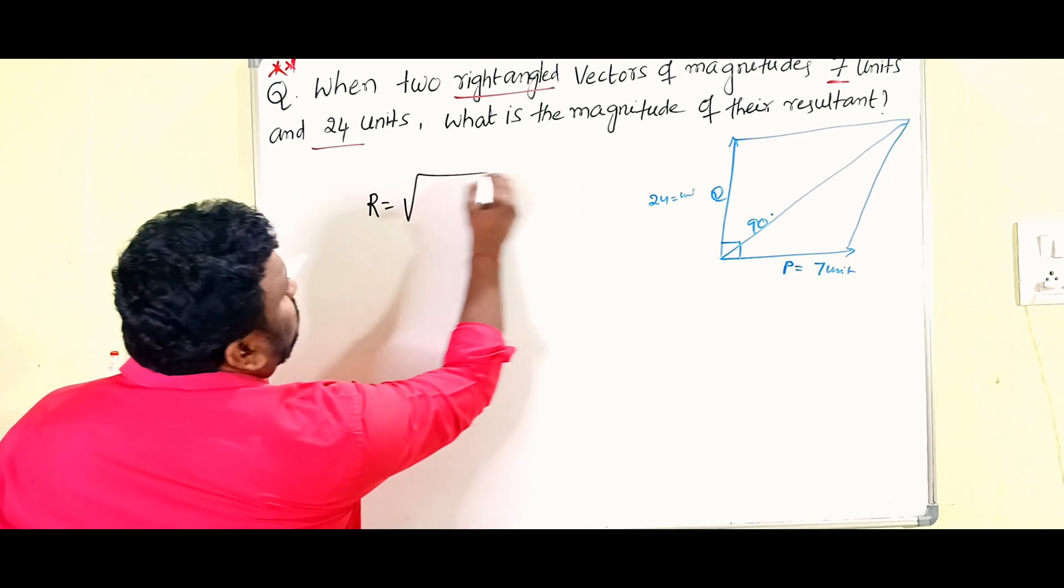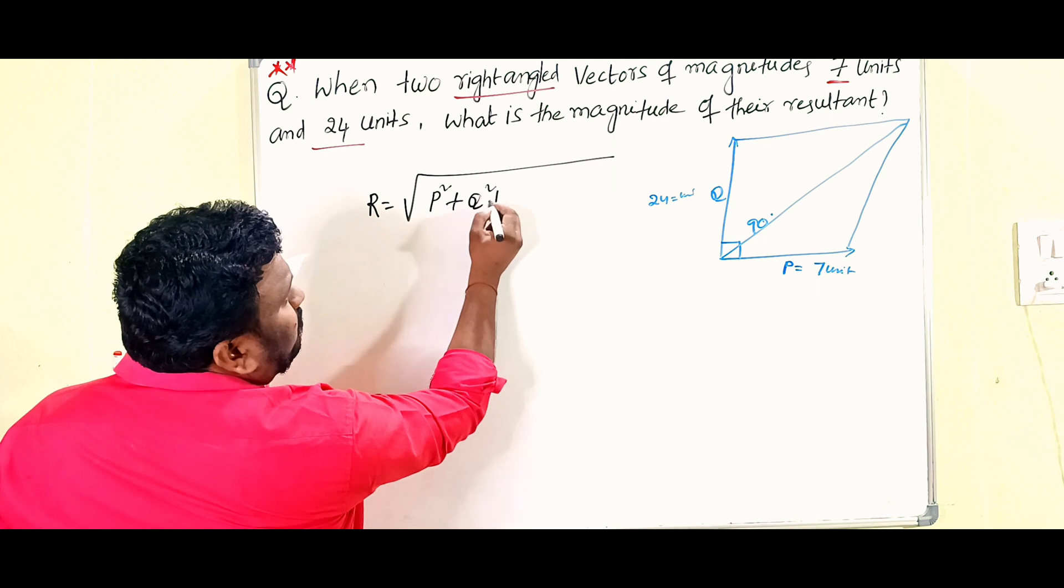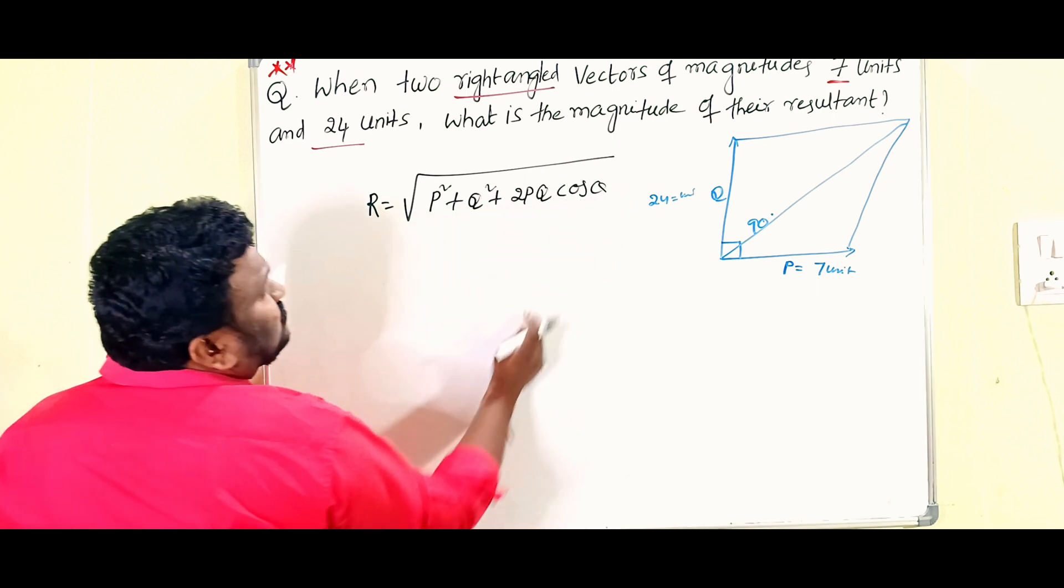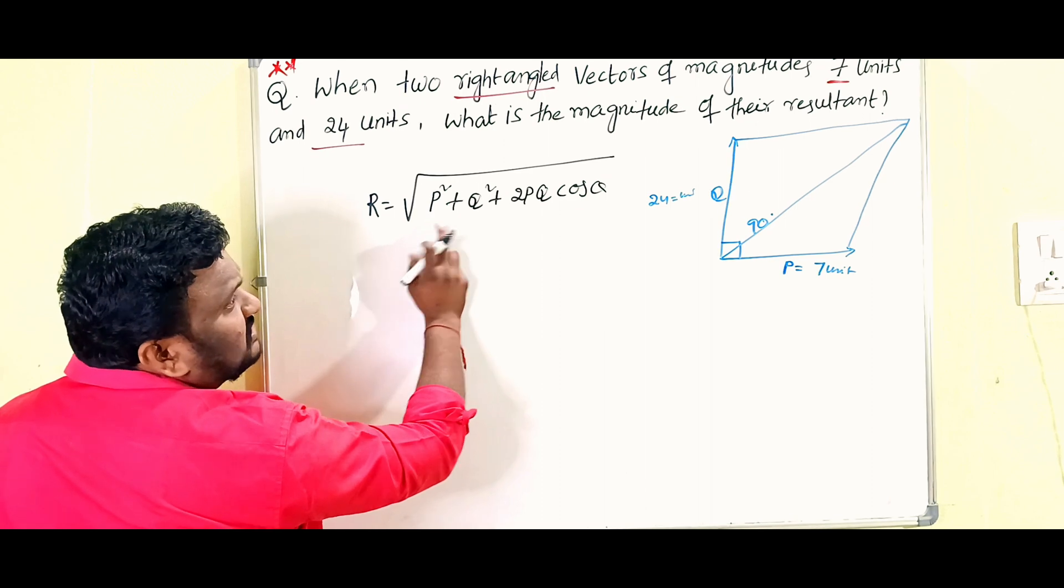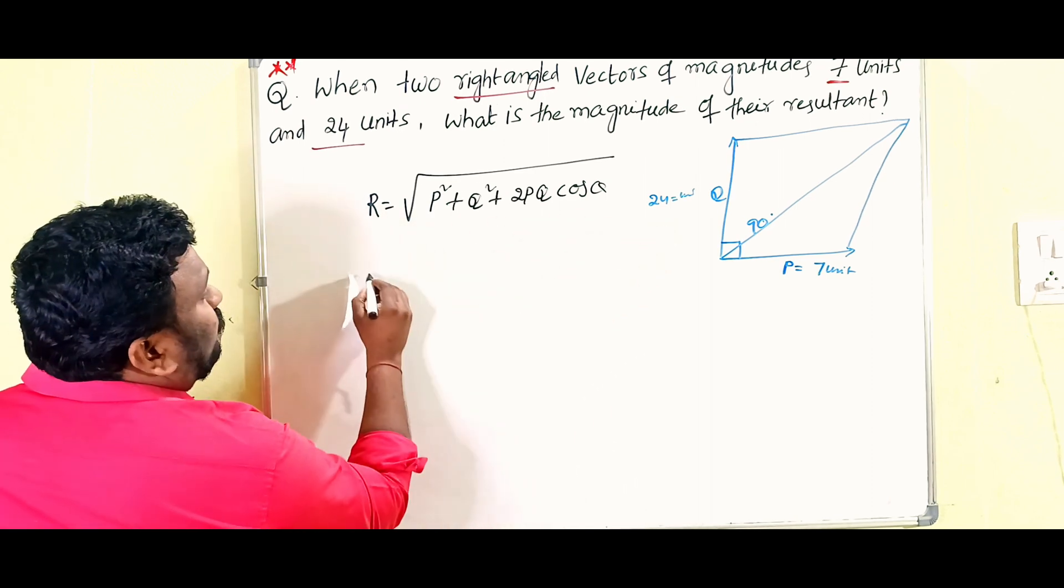That formula is R equals to under root of P square plus Q square plus 2PQ cos theta. P is given 7 units and Q is given 24 units, so that's why here we are going to substitute.